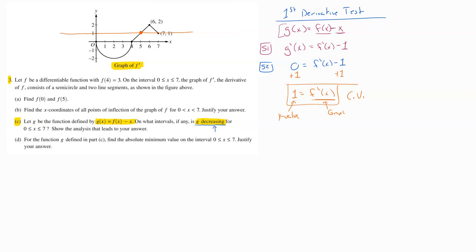Then step three of the process is we need to know where this thing is decreasing. Decreasing means you would have a negative derivative. You would want to know when is G prime of X less than or equal to zero. So I want to know when is F prime of X minus one less than or equal to zero.